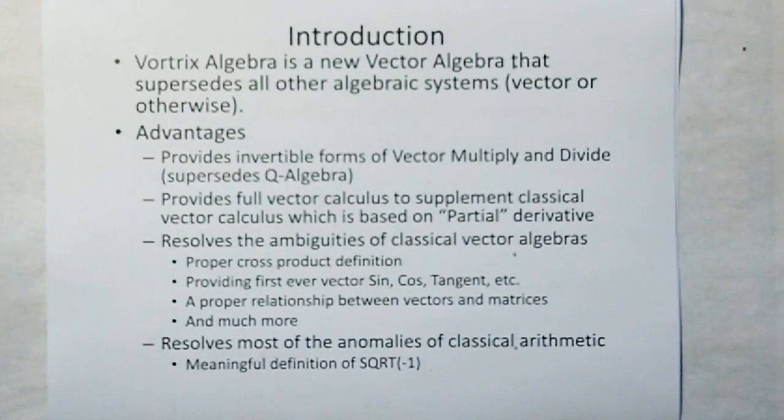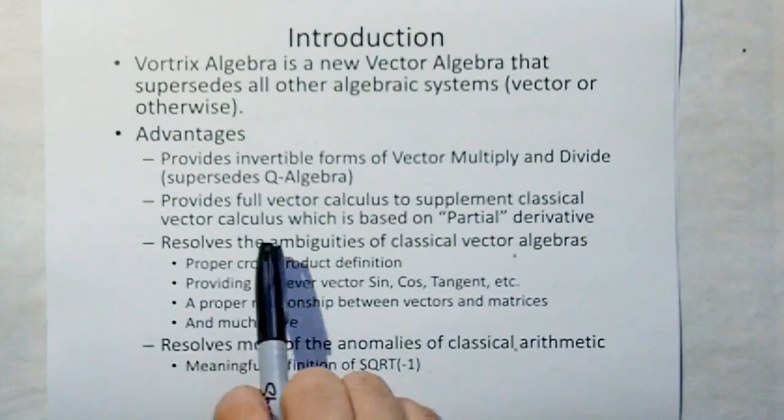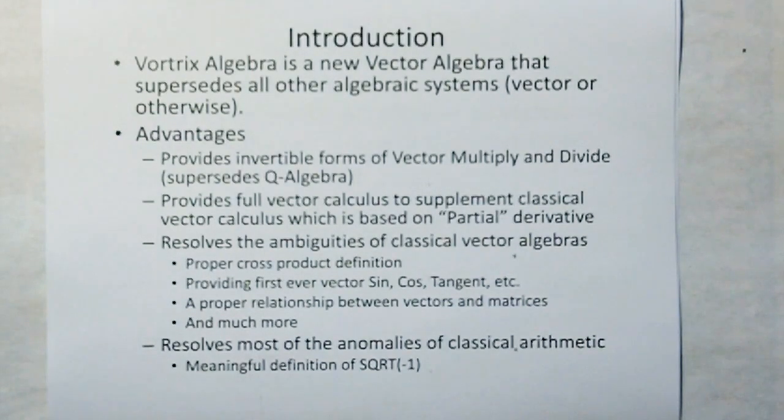The advantage is it provides invertible forms of vector multiply and divide, which supersedes the Q-algebra versions. It provides for a full vector calculus to supplement the classical vector calculus, which is based on partial derivatives, or partial calculus.